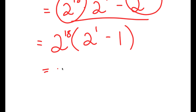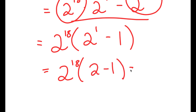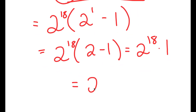This is equal to 2 to the power of 18 times — 2 to the power of 1 is 2, so I get 2 minus 1, which equals 2 to the power of 18 times 1, which is equal to 2 to the power of 18. So I get 2 to the power of 18 as my answer.